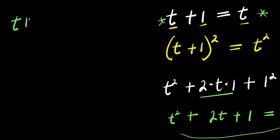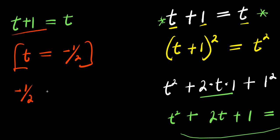So we have t plus 1 equals t and our t from what we have solved is negative 1 over 2. So we insert it right here, so we have negative 1 over 2 plus 1 equals negative 1 over 2.